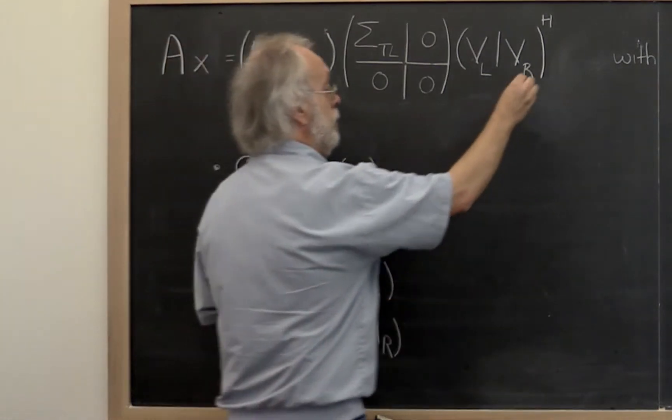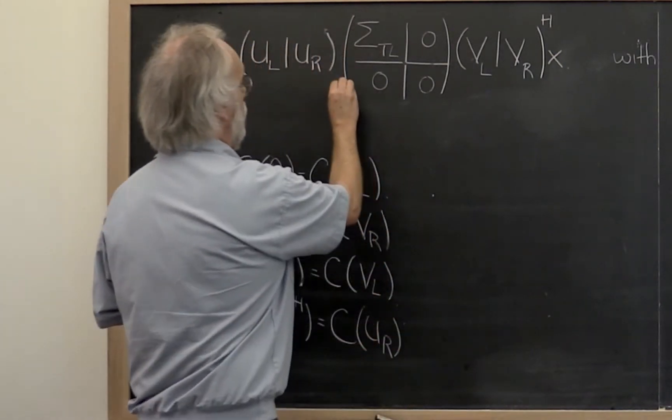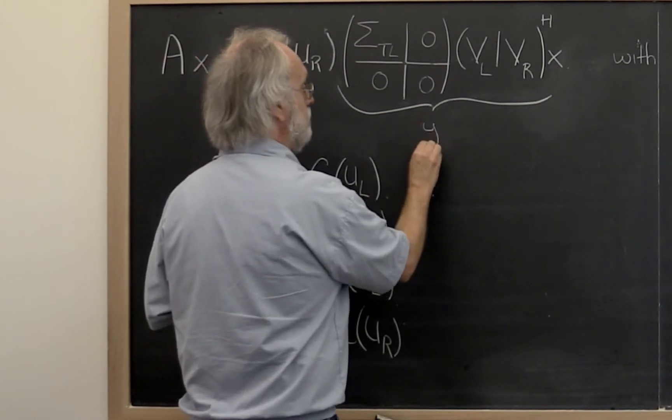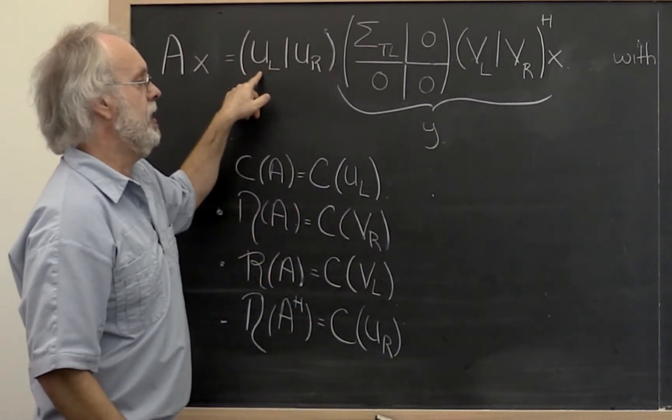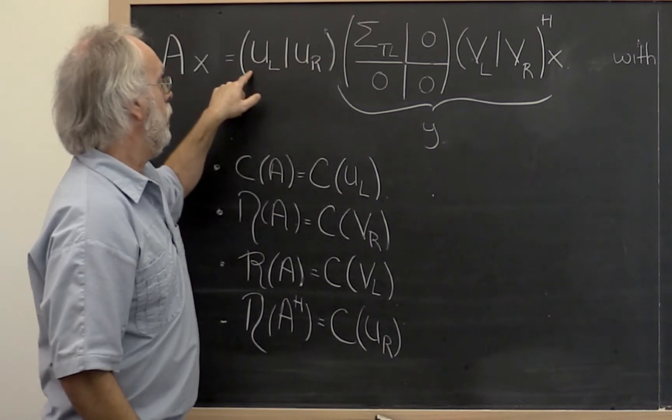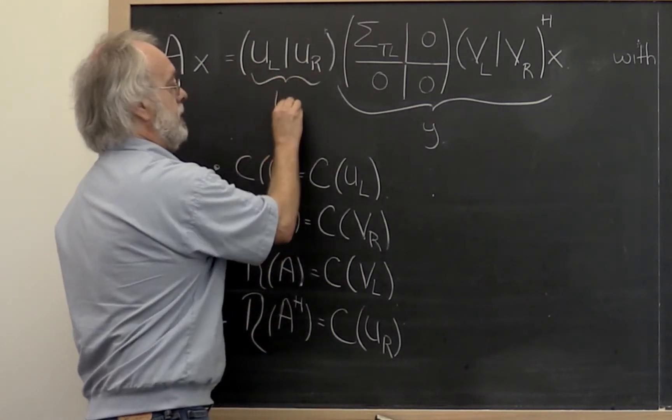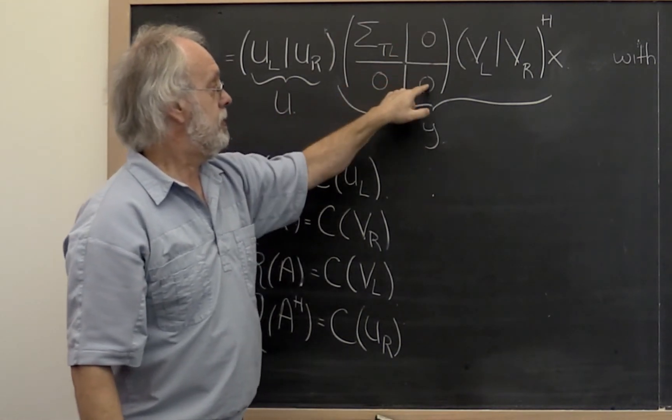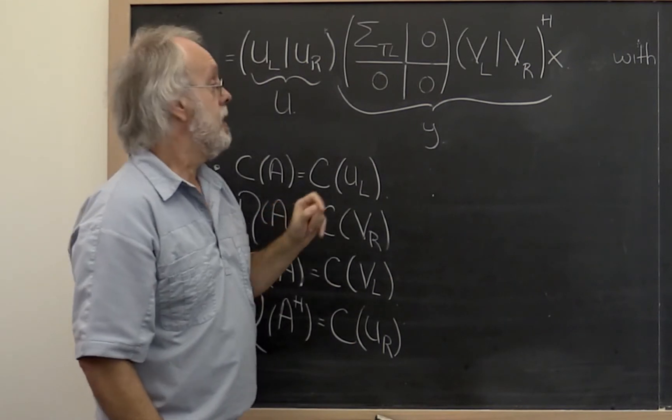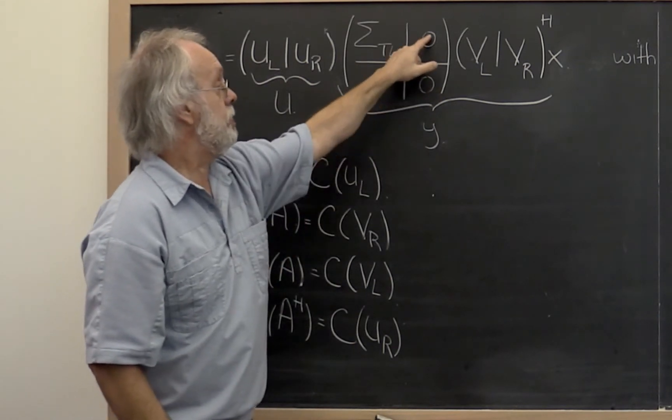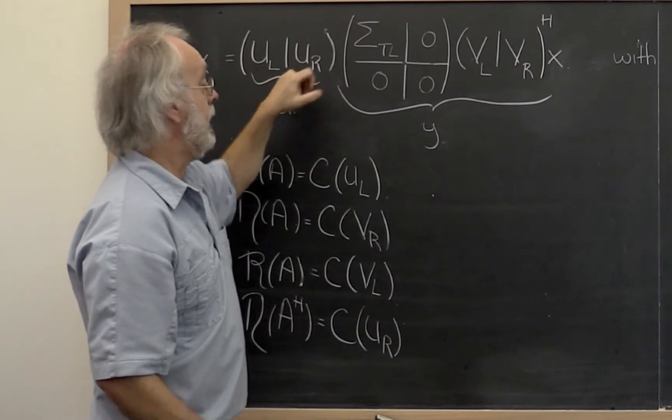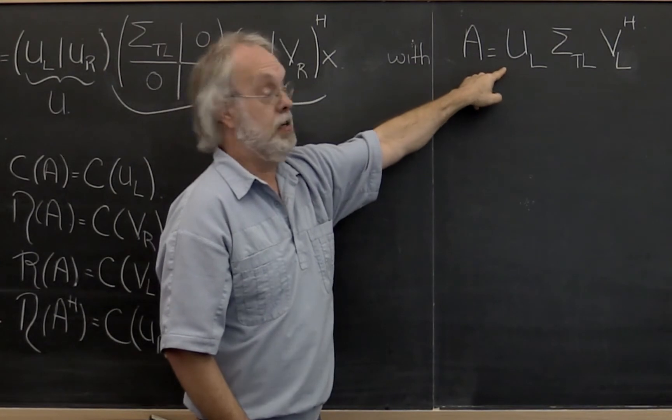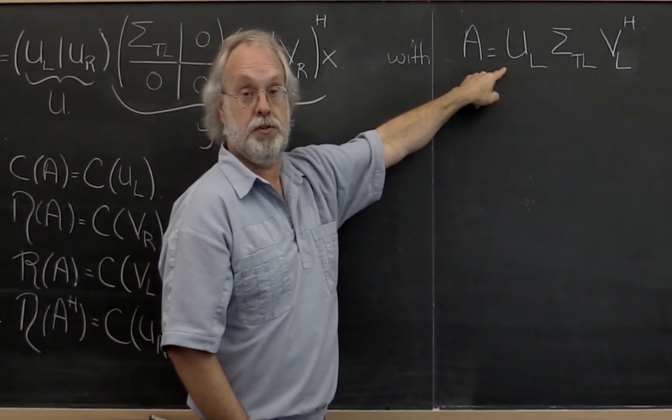Now if you put x here as well, then you notice that all of this is some vector. Let's call it y. And therefore it seems like you're taking a linear combination of all of the columns of this matrix U right here. But if you look carefully, there are all these zeros in this matrix right here. And the result of having those zeros in that matrix right here is that U_right kind of disappears. And actually you can see that very easily over here when you look at the reduced singular value decomposition.